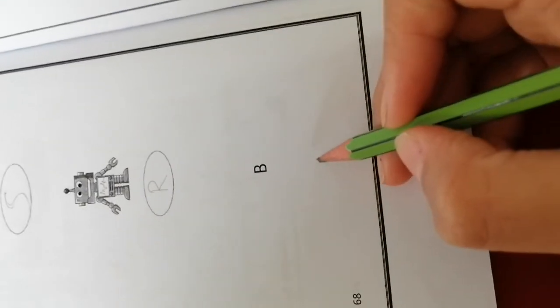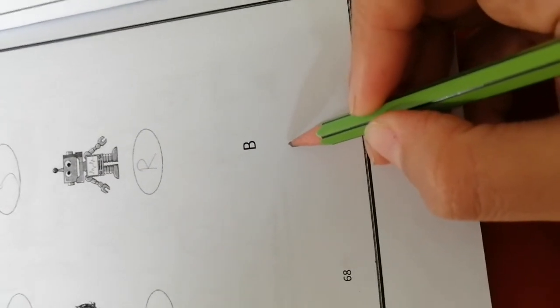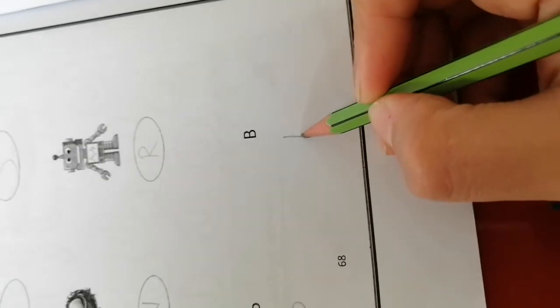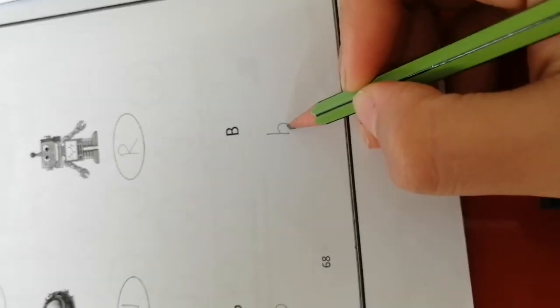And what is this? B. How can I write a small B? Stick down, half circle.